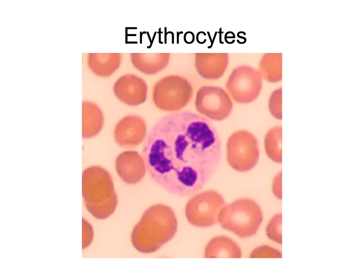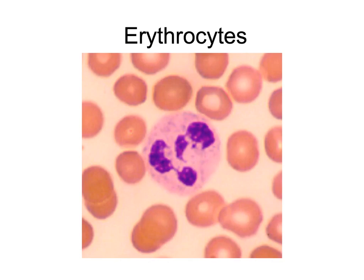We will begin our study of formed elements with erythrocytes. The erythrocyte is the scientific name for red blood cells. Each of these small pink cells that we're looking at is an erythrocyte. The larger structure we see is a white blood cell. Notice that erythrocytes lack a nucleus and mitochondria. The lifespan for erythrocytes is about 120 days. Within each erythrocyte there are about 28 million hemoglobin molecules, and each hemoglobin molecule can carry four oxygen atoms.